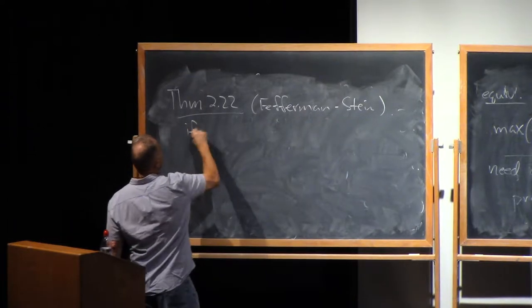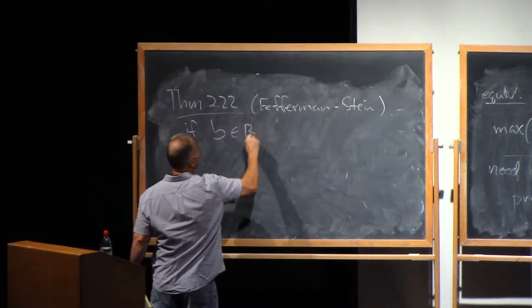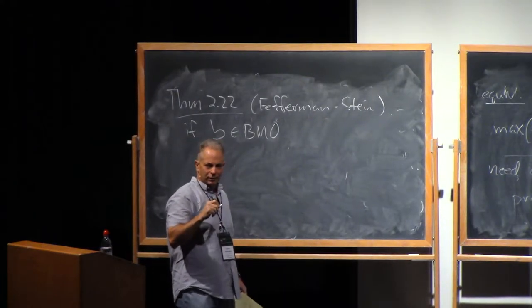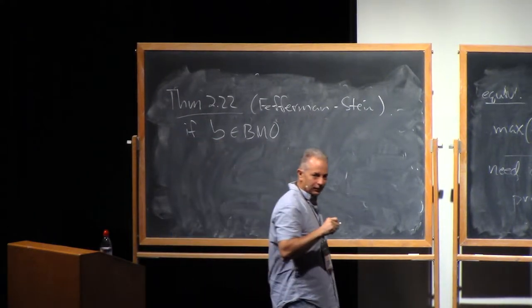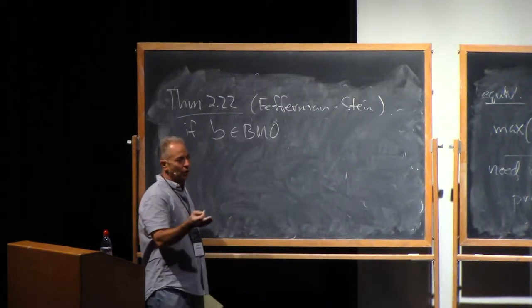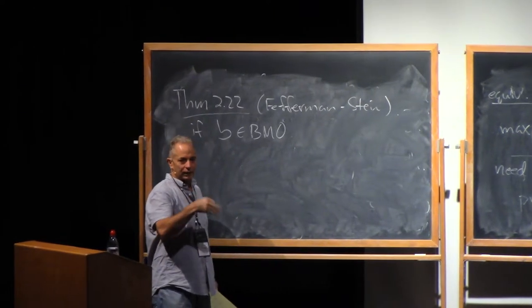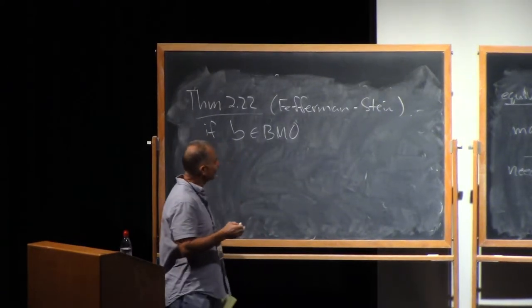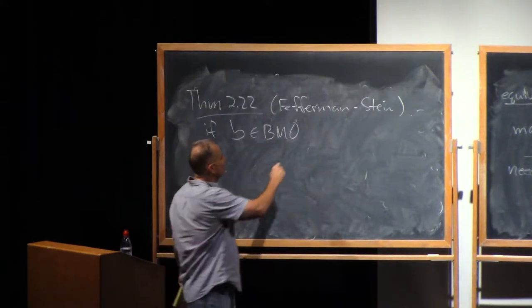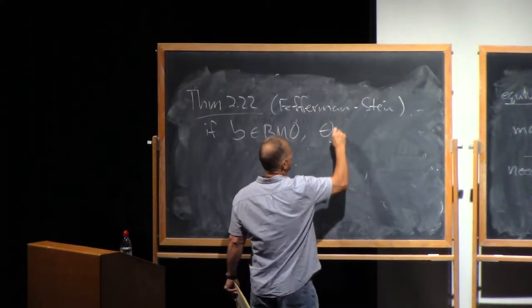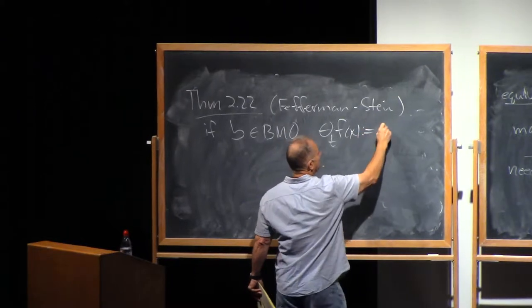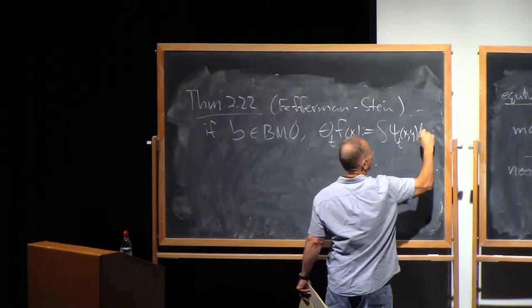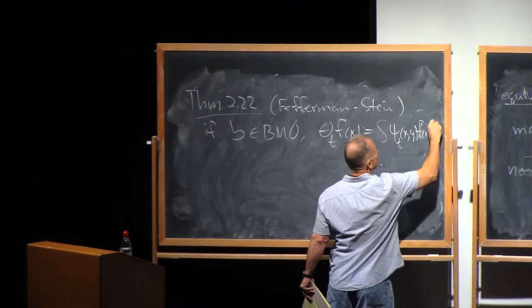It says that if B is a BMO function. Does everybody know what BMO is? It's in the notes. By the way, the notes, some people asked, you have to download the app to get the notes. This is a broken record by now. So if B is in BMO, and theta_T is going to be defined to be, as usual, psi_T of X, Y, F of Y, dY.